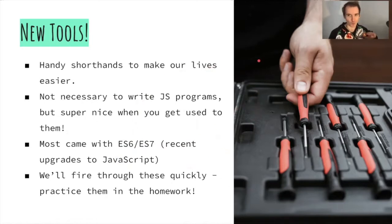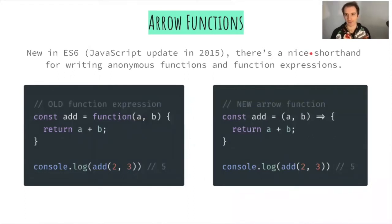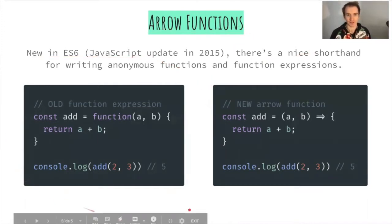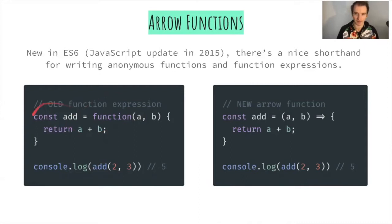The first thing to introduce is arrow functions. So far we've been writing function expressions — an anonymous function stored in a variable with its arguments and body. You'll get practice with these in the homework via some freeCodeCamp exercises, so if it doesn't make sense now, working through those will help.